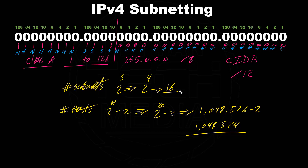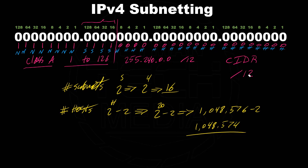So this is no longer a default subnet mask for Class A. With the CIDR notation of /12, we get a new subnet mask. Converting the binary to decimal: all 8 bits on in the first octet gives 255. In the second octet, the 4 bits turned on are 128+64+32+16 = 240. The remaining octets are all zeros. So the new subnet mask is 255.240.0.0, or /12.